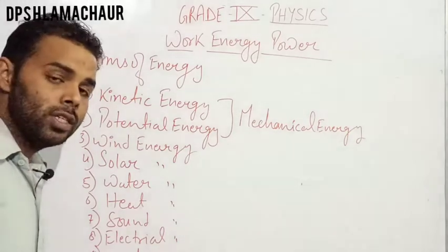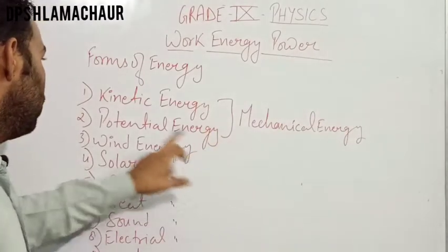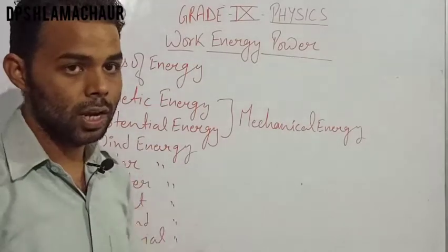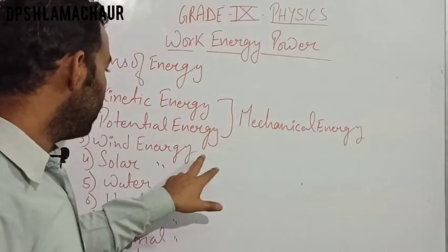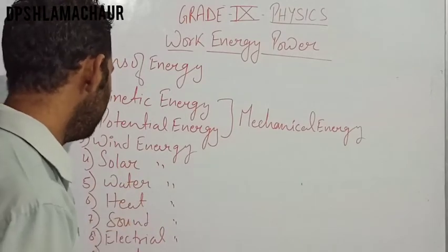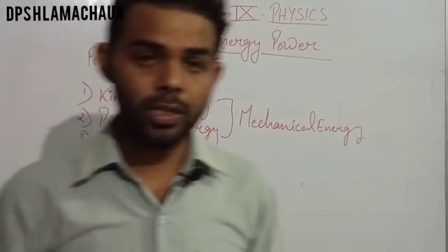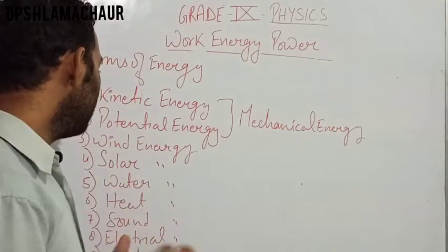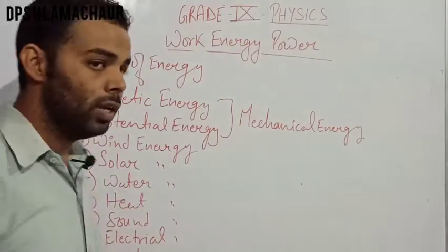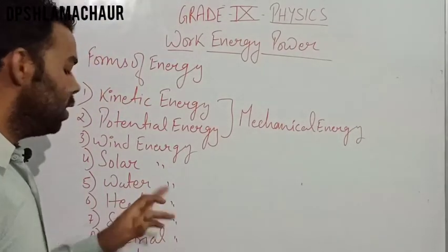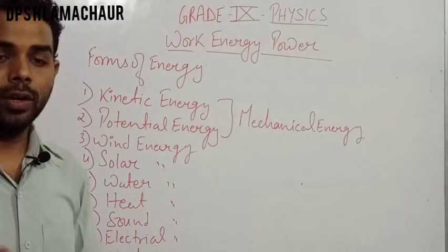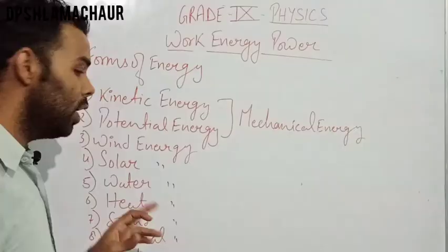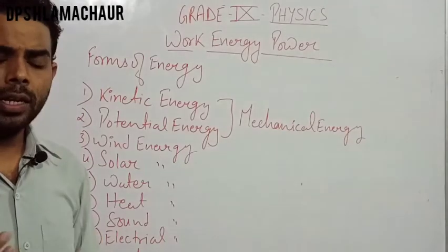In ninth class we are going to talk about mechanical energy — specifically kinetic energy and potential energy. For the other forms: wind energy is energy generated with the flow of wind, used in windmills. Solar energy comes from the sun — it is heat and light energy. Water energy includes tidal energy and hydropower plants from rivers. Heat energy is produced from fuels like petrol, diesel, and coal.